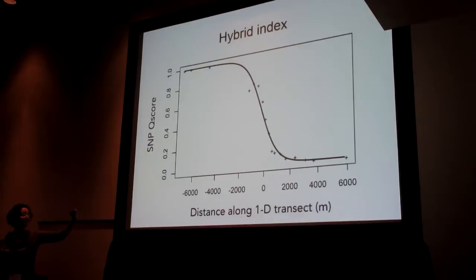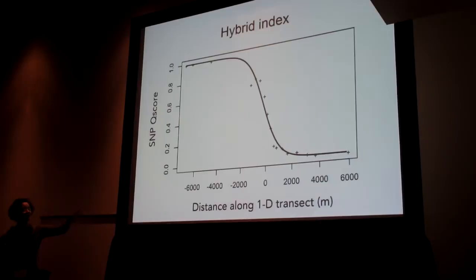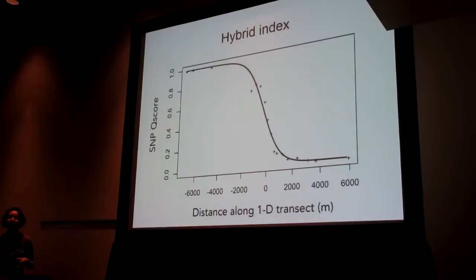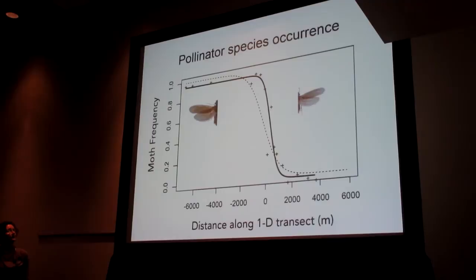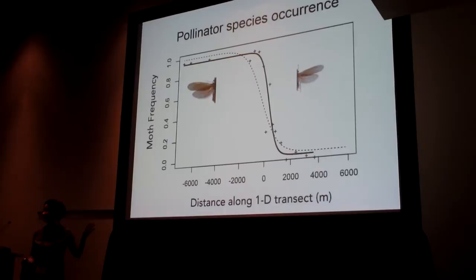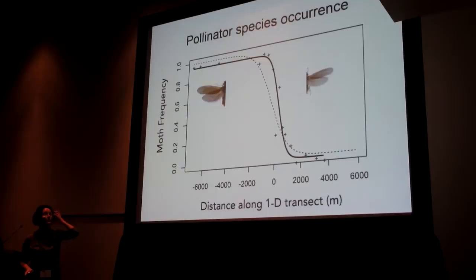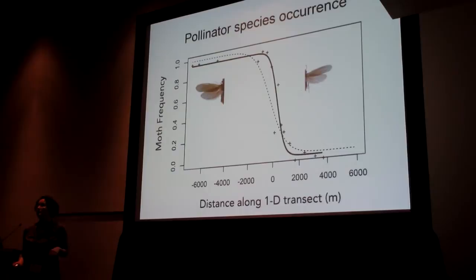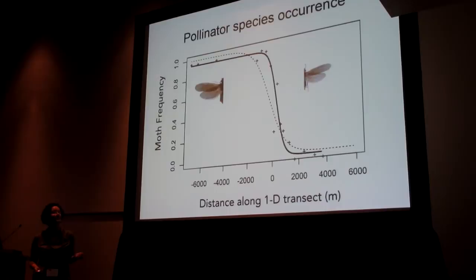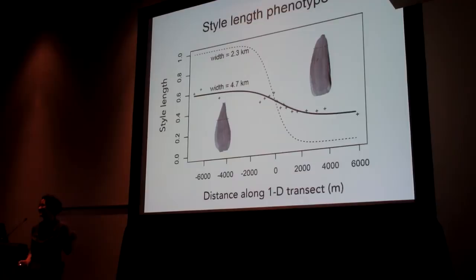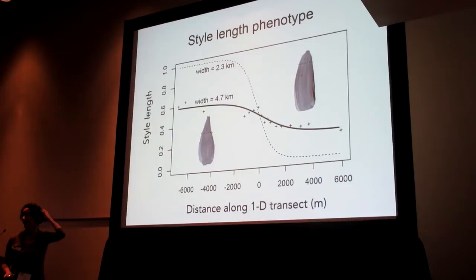Here's our hybrid index cline. Each plus mark is an average for a bin of at least 10 trees along the transect. This is a cline that's quite steep and narrow compared to many other hybrid zones — a fast transition from one species to another. When we look at our putative agent of selection, the moth frequency, we see a cline that's a really good match — not significantly different in width or center. The moths show a remarkable matching of the tree distribution. If moths are exerting strong selection on style length, we would expect this to produce a strong cline in style length. But here's what the phenotypic cline looks like — the center is not significantly different, but the width is much wider, at least twice as wide.